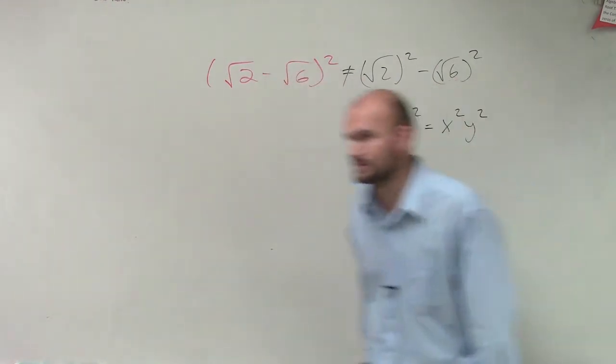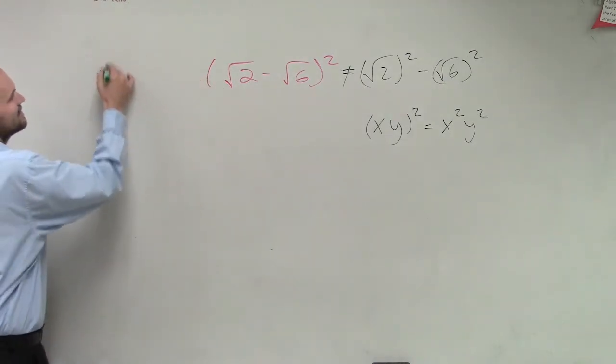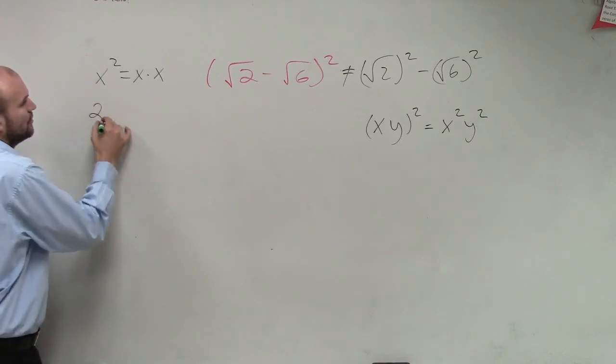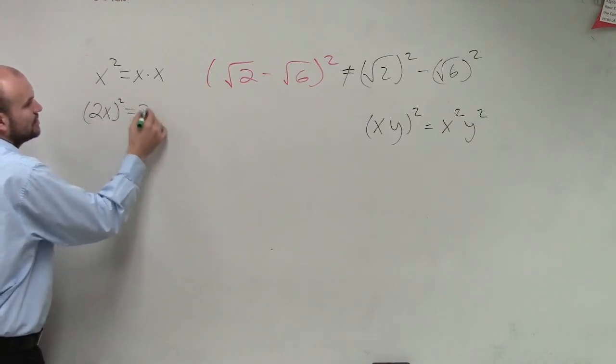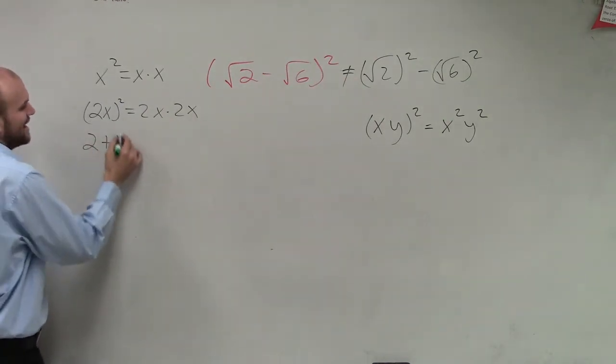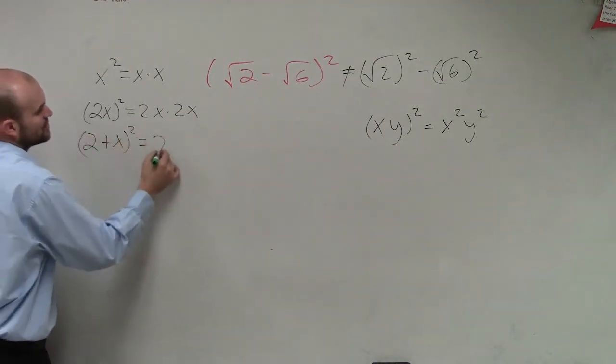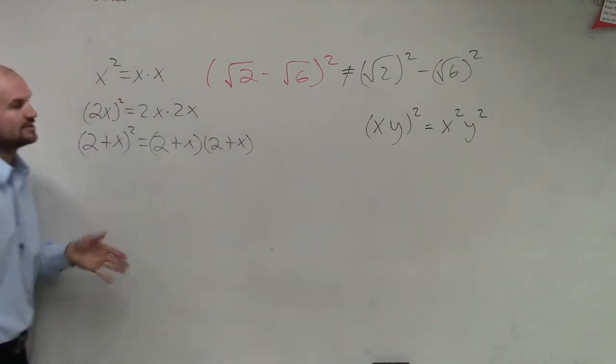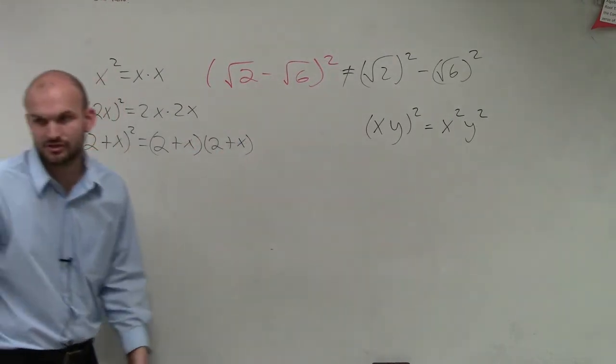So what do you do for this? Well, x squared equals x times x. 2x squared equals 2x times 2x. So 2 plus x squared equals 2 plus x times 2 plus x. Does everybody follow my pattern that I've just created?